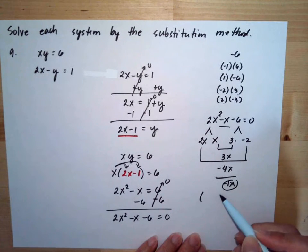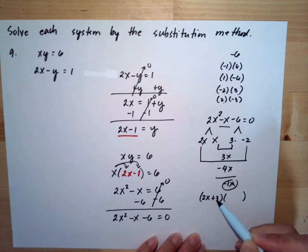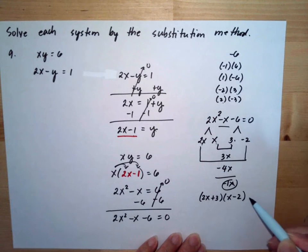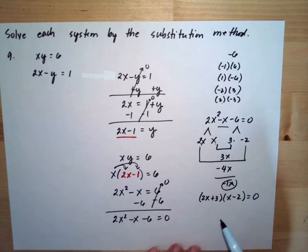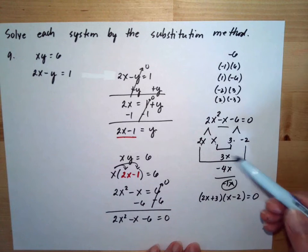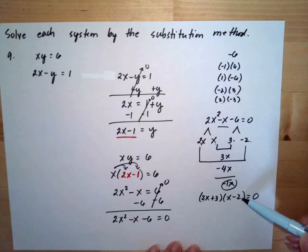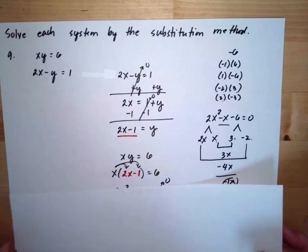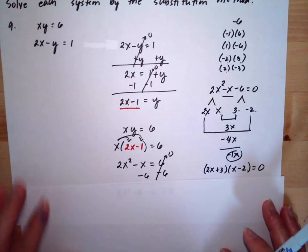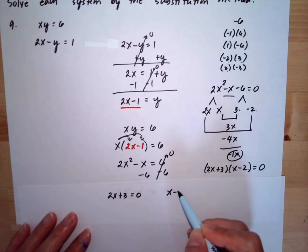So our factored combination will be (2x plus 3) times (x minus 2) is equal to 0. You really need to be careful with the combination of your factors, because if you mix up the combination it will give you a wrong answer. You can check that the outer factors align correctly. Then we equate each factor to zero: 2x plus 3 is equal to 0, and x minus 2 is equal to 0.